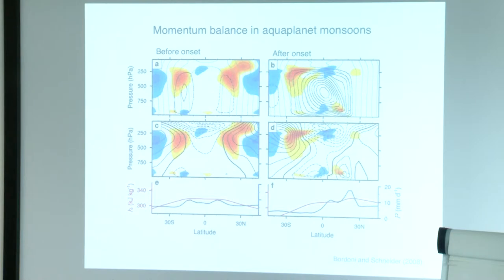Eddy stresses really constrain the strength of the circulation. These are the large-scale eddies originating at higher latitudes. They propagate in a region of upper-level westerly flow. Once they start approaching the critical line — the zero-wind line — they break, and they extract momentum from the flanks of the circulation and converge it to higher latitudes.